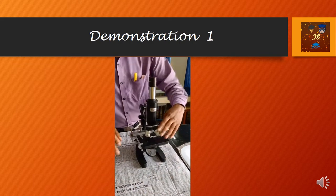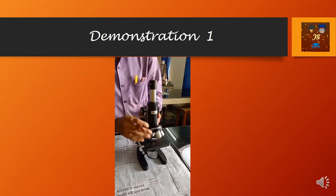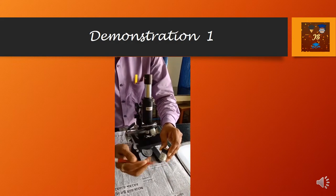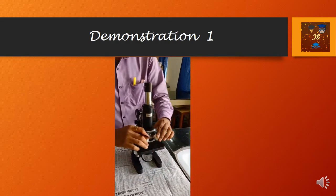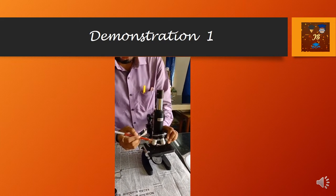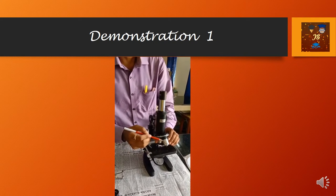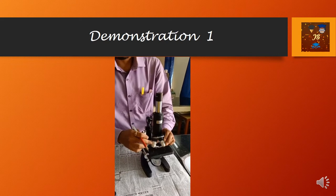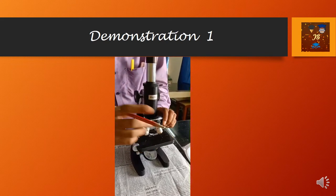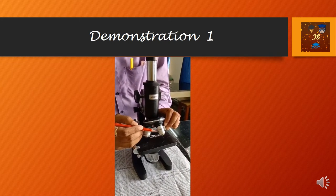This one is 100x, and this is called the oil immersion lens. So both are objectives — this one is low power, this one is high power. To clarify: 10x is the low power objective, 40x is the high power objective, and 100x is the oil immersion lens.